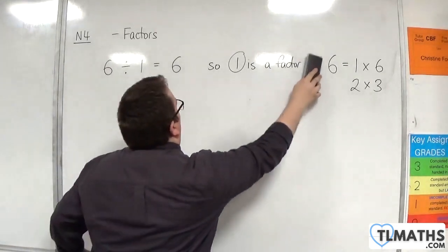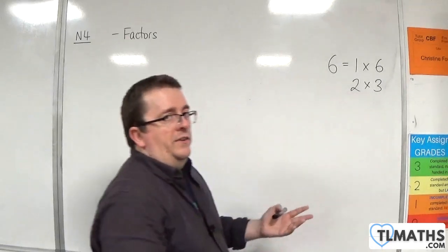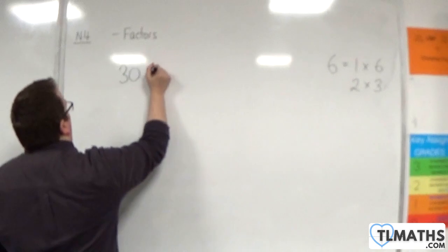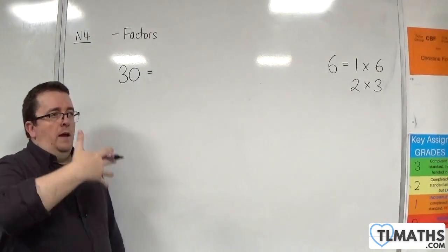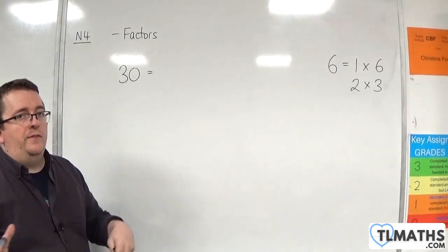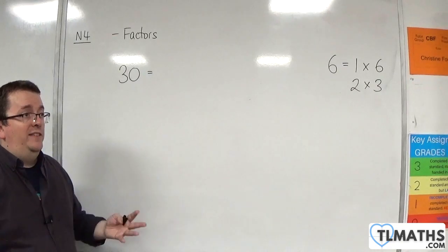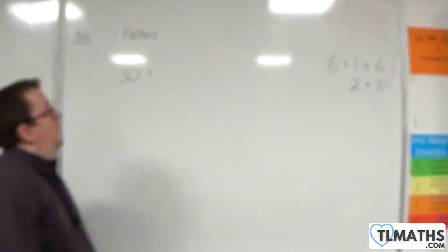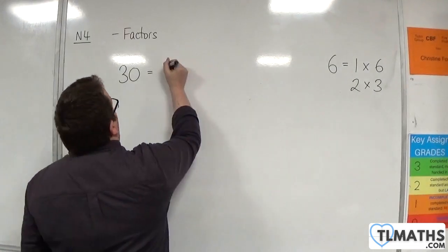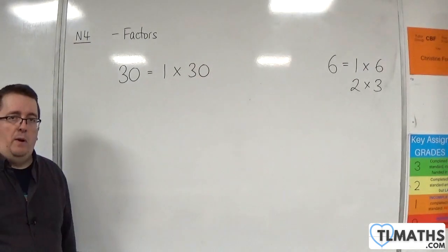Let's say we wanted to find the factors of 30. You can imagine that if I went about dividing 30 by 1, 2, 3, 4, 5, 6, 7, 8, 9, 10, all the way up to 30, I'd be here quite a long time. I don't want to have to do that. The first thing you identify is that 30 can be found by multiplying 1 and 30 together.